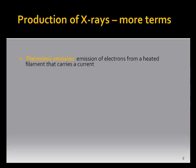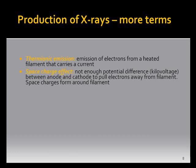Diagnostic tubes have rotating anodes while therapy tubes have stationary ones — we've talked about that. Thermionic emission: the emission of electrons from a heated filament that carries a current. If you apply a current to a filament, thermionic emission will emit electrons — 'thermionic' through temperature increase.